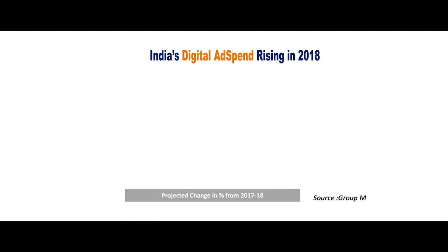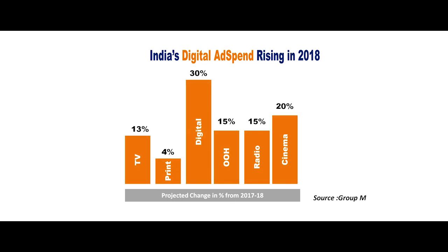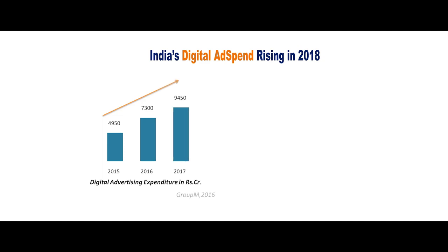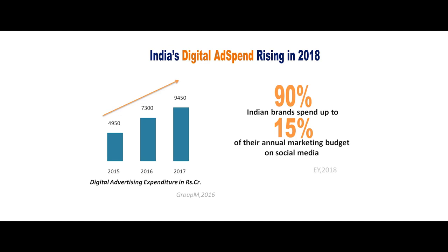The basic question is: is digital marketing really picking up in India? Let us look at a few facts. This diagram shows India's ad spend change during 2017 to 2018. It is clearly visible that among all channels of promotion, the change in ad spend is highest for digital platforms, at 30%. Although these figures are projected, they give a clear indication that businesses are spending more and more money on digital platforms. In absolute terms, digital marketing expenditure increased from 4,950 crore rupees in 2015 to 9,450 crores by end of 2017. A recent report by EY shows that 90% of Indian brands spend up to 15% of their annual marketing budget on social media marketing activities.